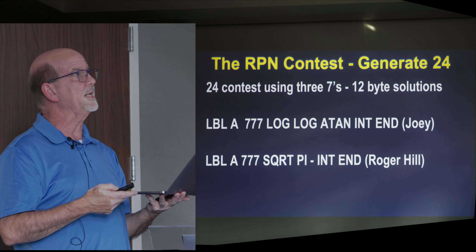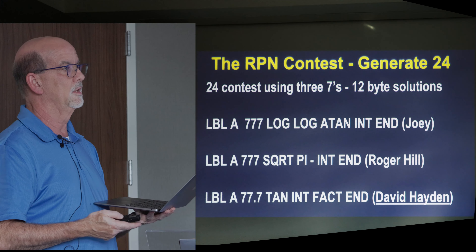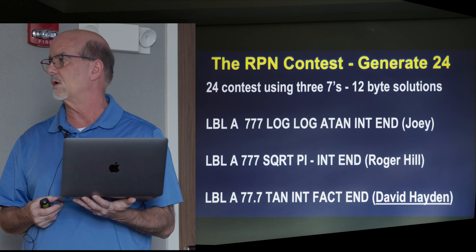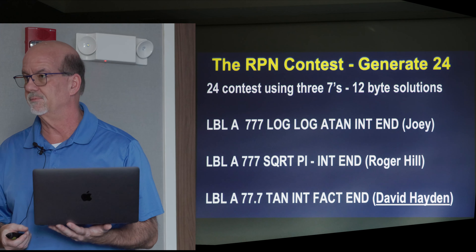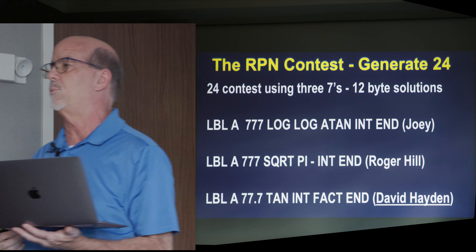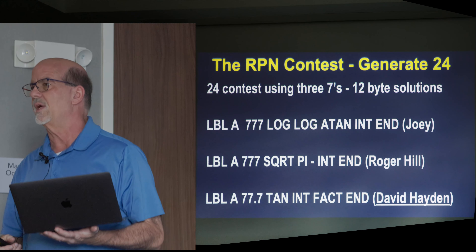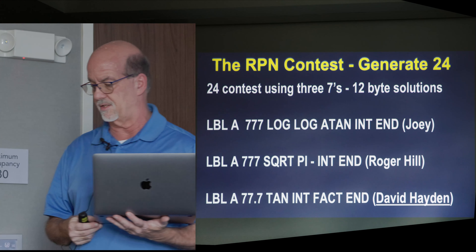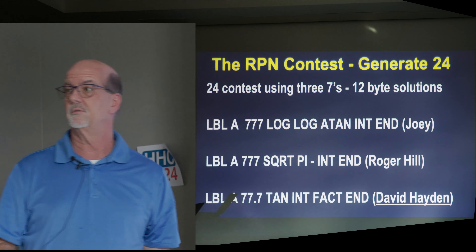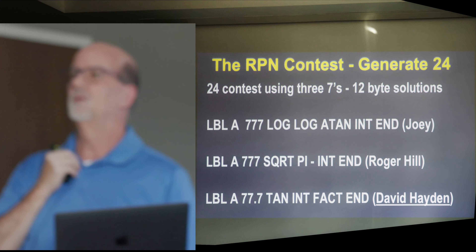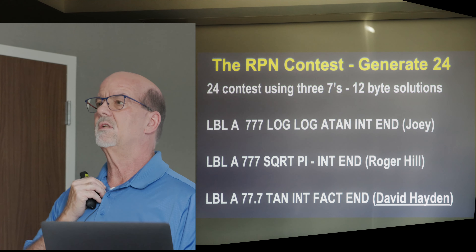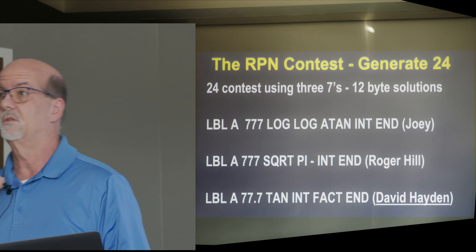For the RPN basic contest, the winner is David Hayden. 77.7, tangent, integer, factorial, end — gives you 24. Congratulations David! David can pick from the designated area of door prizes back there, and we have a certificate for the RPN basic contest. This one that David did wasn't one that the TI people had also found. What did you pick, David? The Bluetooth speaker — it works great at the beach, that's what I use it for.